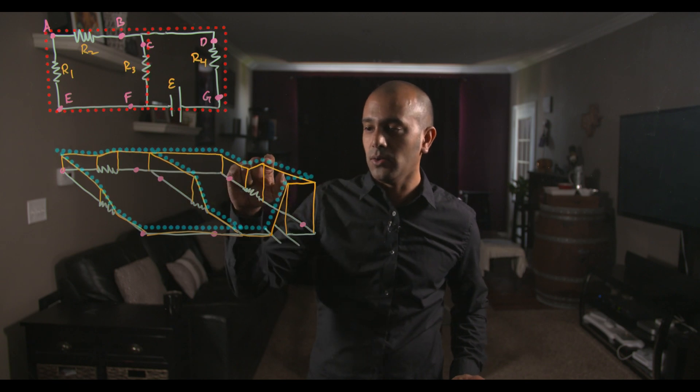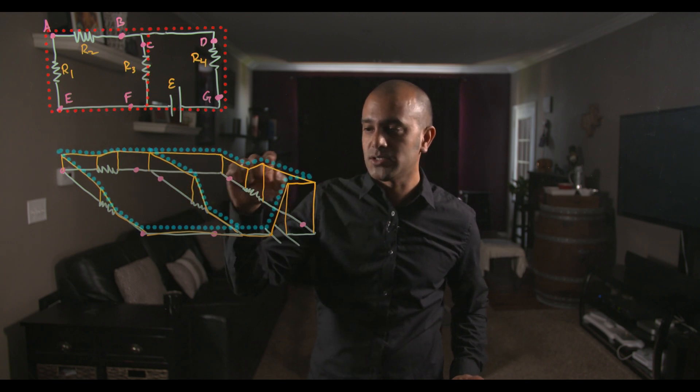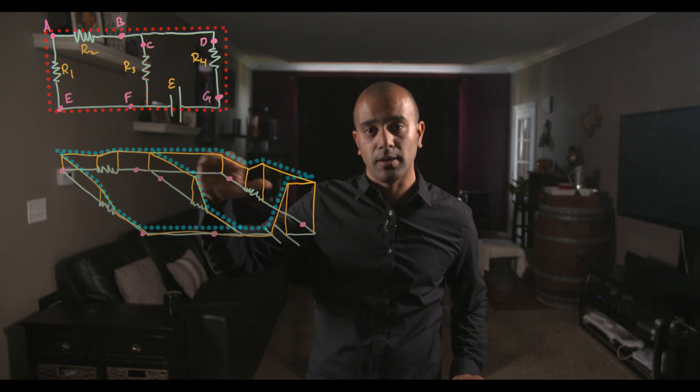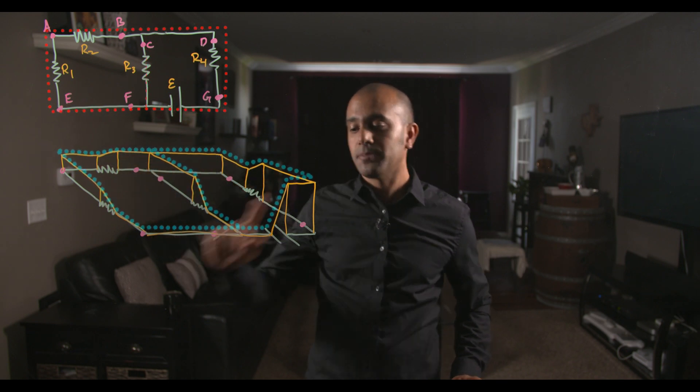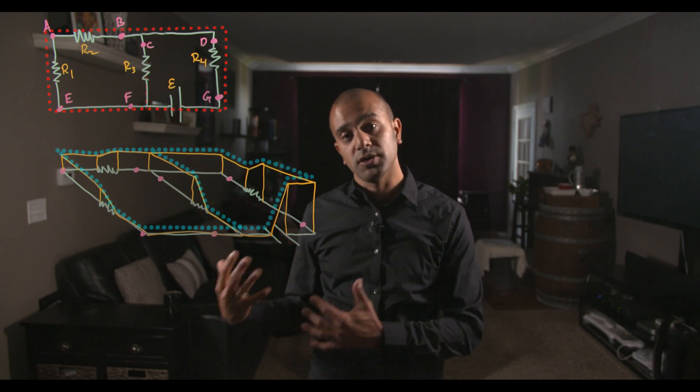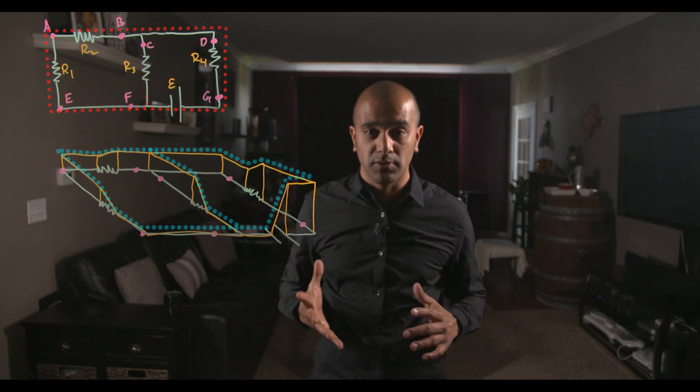Any time you go across a resistor the current flows in the direction that the ramp decreases. The only place where it goes up the ramp is at the battery because the battery is pushing the current up the potential using chemical forces.